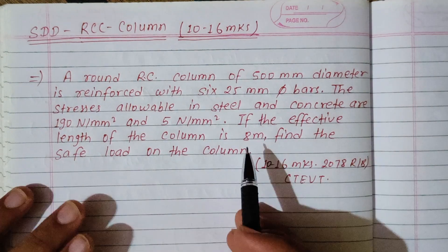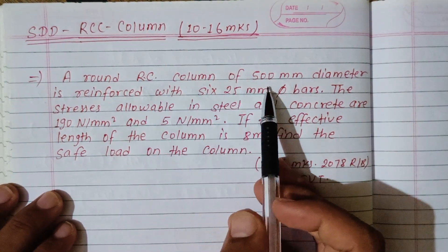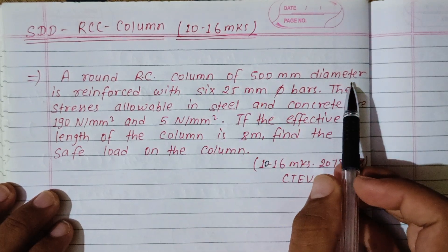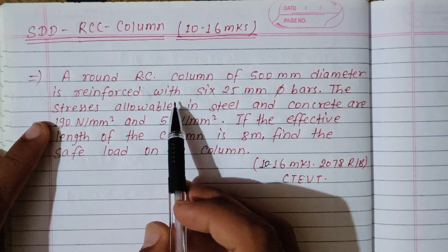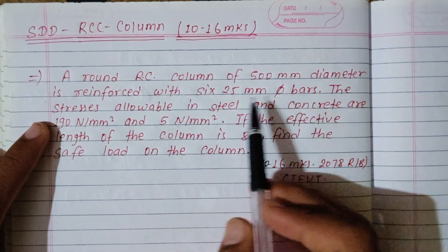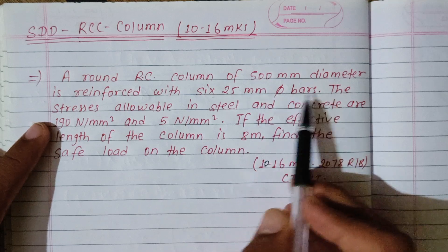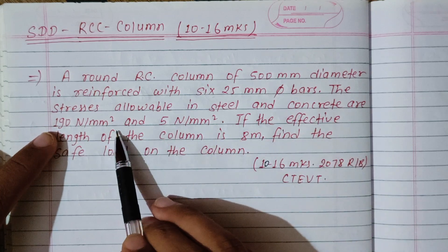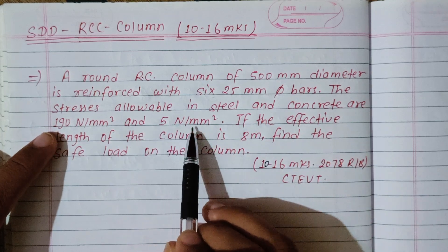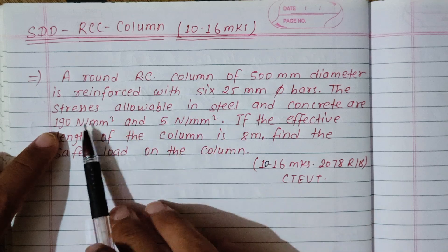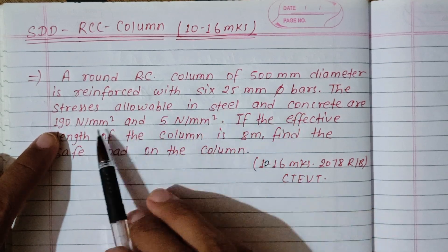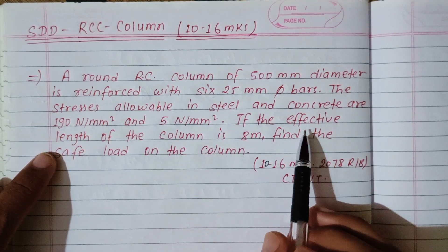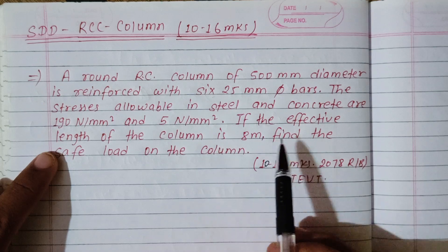We have a question: a round RC column of 500 mm diameter is reinforced with 6 bars of 25 mm diameter. The allowable stresses in steel and concrete are 190 N/mm² and 5 N/mm² respectively. The effective length of the column is 8 meters.